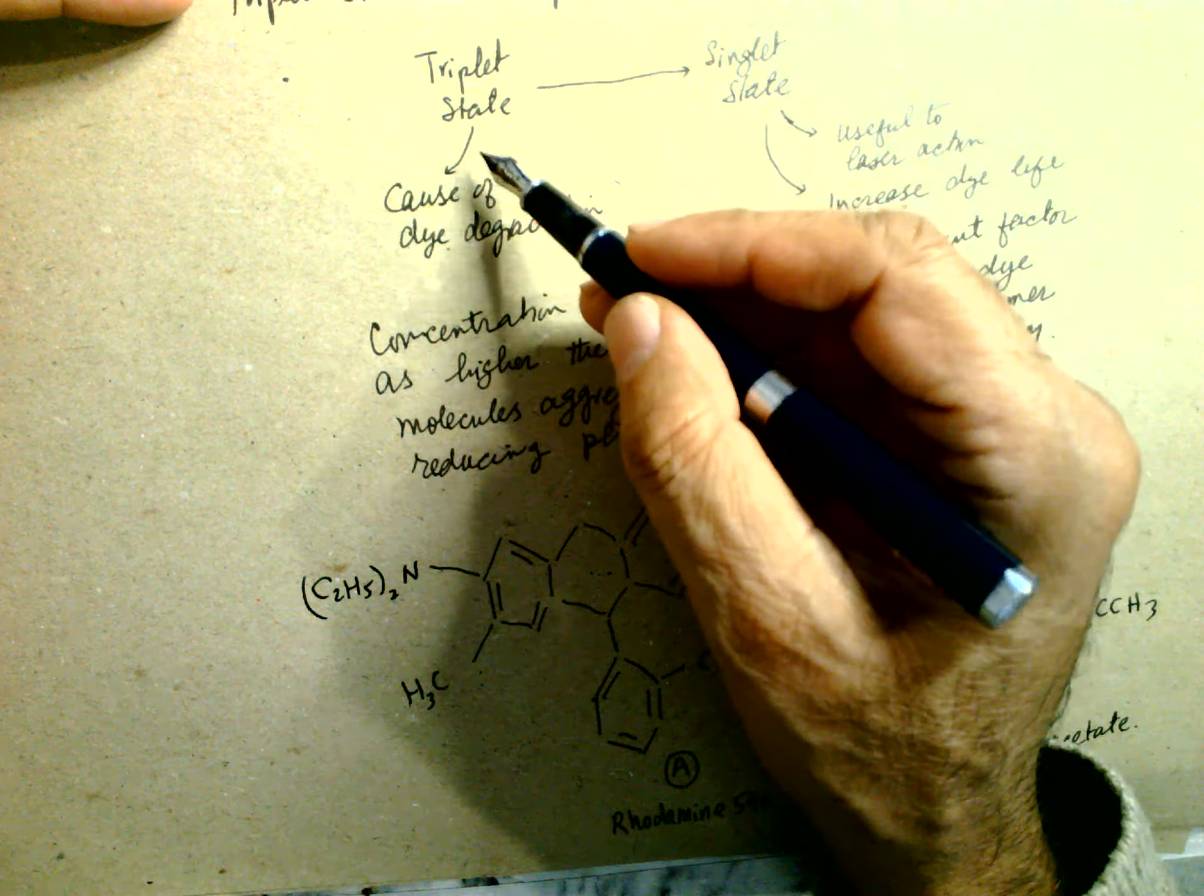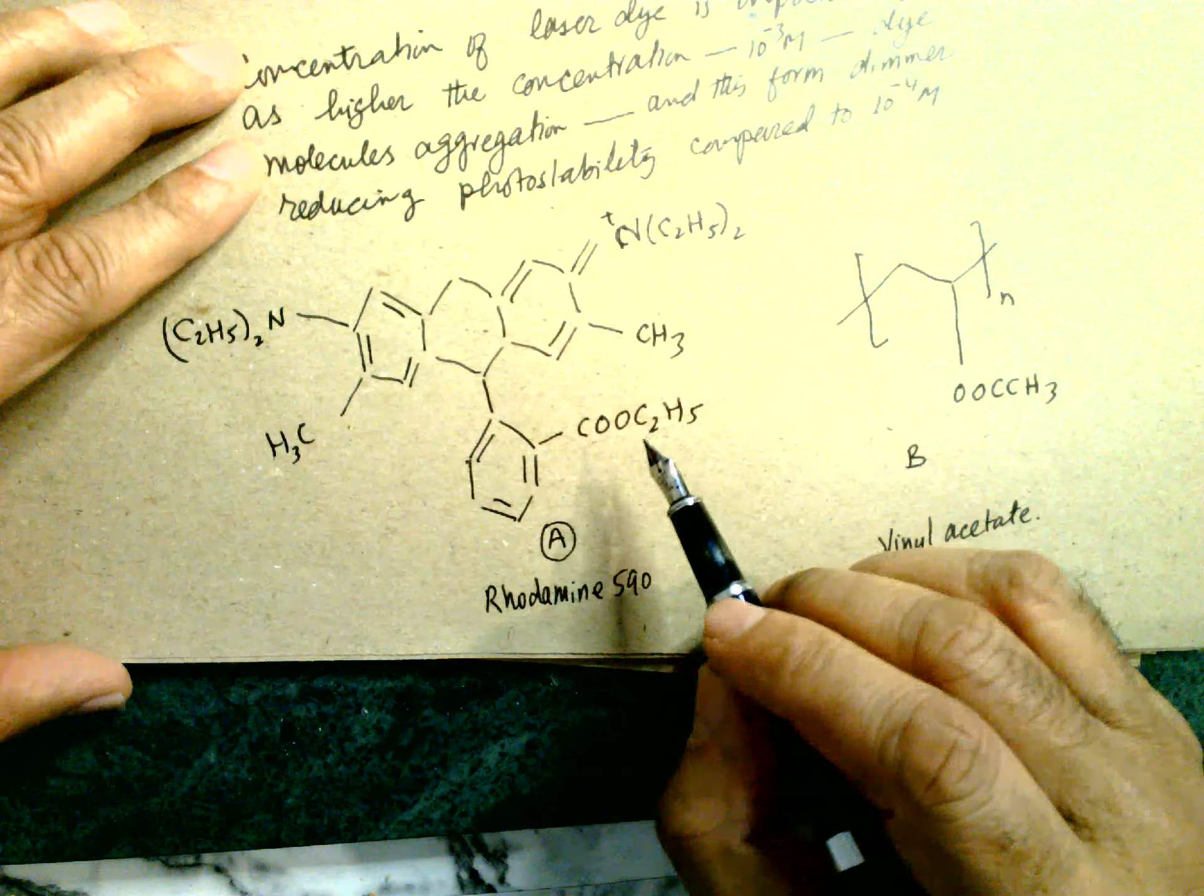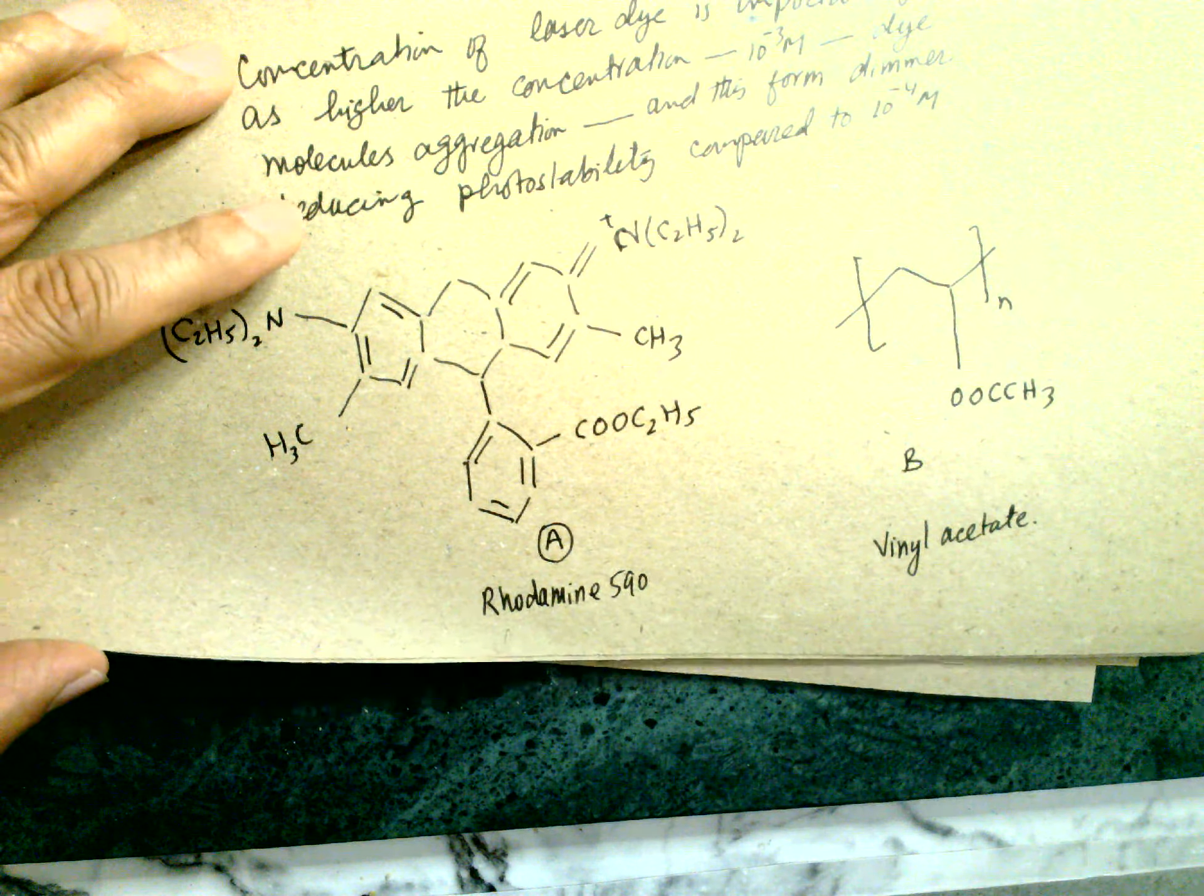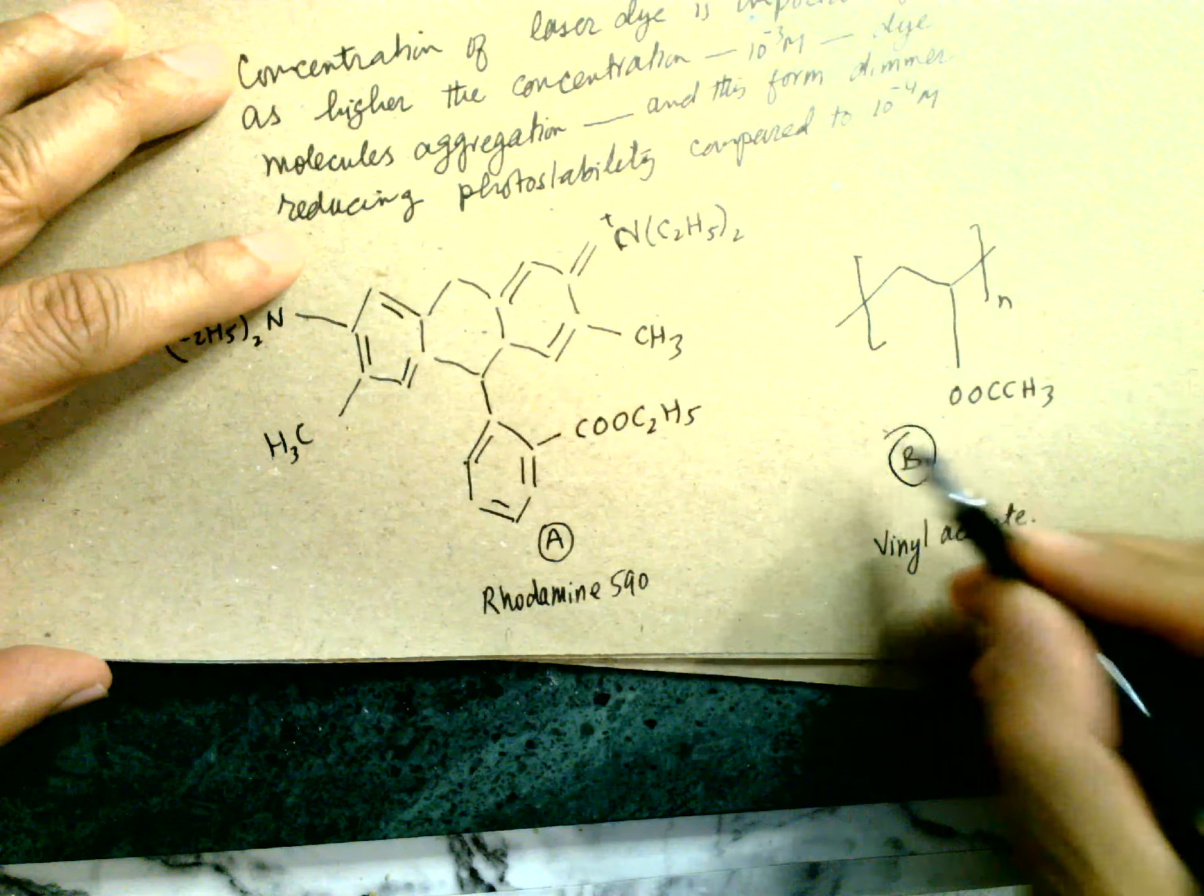Molecule aggregation forms dimers, reducing the photo stability compared to 10 power minus 4 molar. This is the structure of Rhodamine 590 and this is vinyl acetate. This is the cyclic structure, and this is vinyl acetate, A and B.